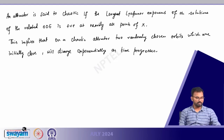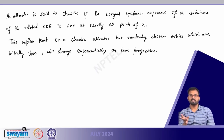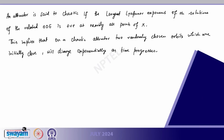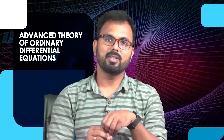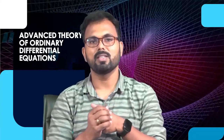These are the definitions on attractors. In the next class we will look at some examples, define fractal dimension, and conclude the chaos theory portion of this course. Chaos theory is a very big topic but we have tried to give a feeling for what we mean by chaos. We will conclude at fractal dimension as mentioned in the syllabus.